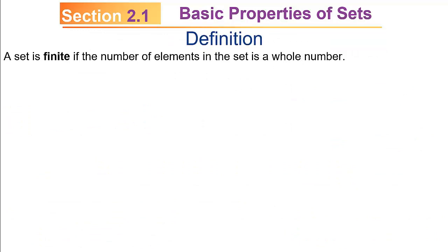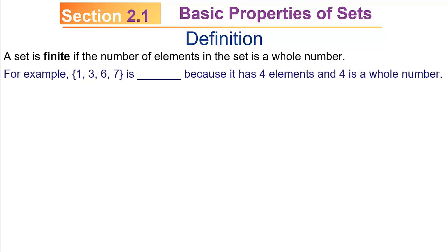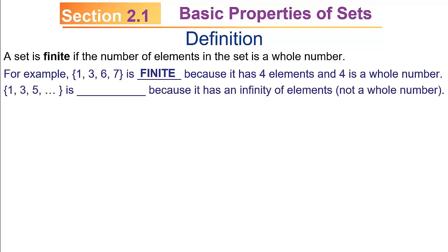A set is finite if the number of elements in the set is a whole number. For example, the set containing elements 1, 3, 6, and 7 is finite because it has four elements, and four is a whole number — you can count how many elements are in there. We say whole number instead of counting number because you could have the empty set, which would have zero elements. Conversely, the set containing 1, 3, 5, dot-dot-dot continues forever, so you can't count them and get a whole number answer — that set is not finite because it has an infinity of elements.